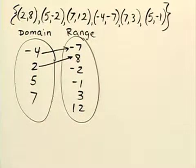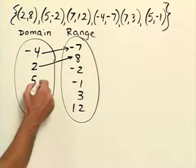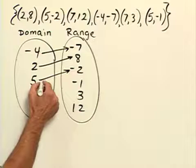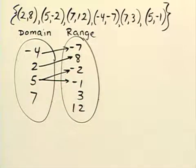5 was paired with negative 2 and also negative 1, so we'll draw arrows from 5 to both negative 2 and negative 1.